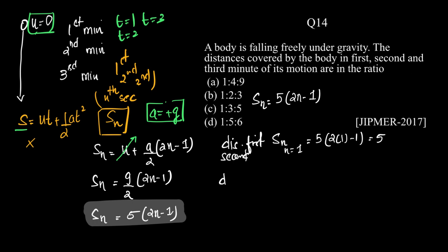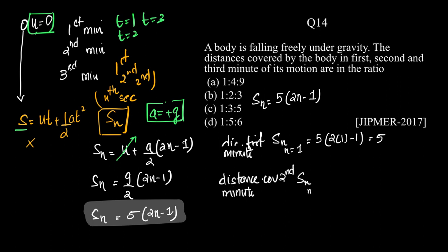The distance covered in the second minute — and it is a minute, not a second, as per the question — is Sₙ at n = 2, which equals 5(2×2 − 1) = 5 × 3 = 15.